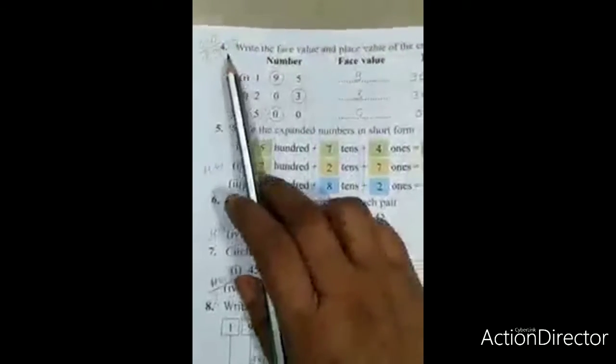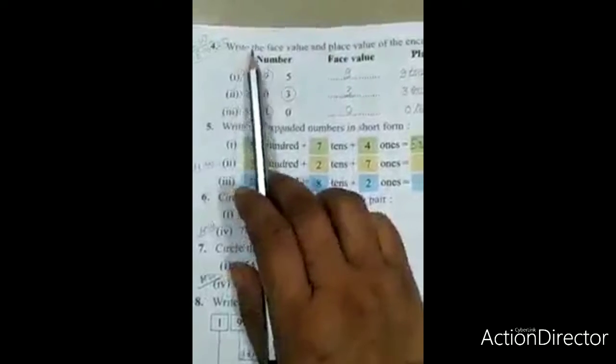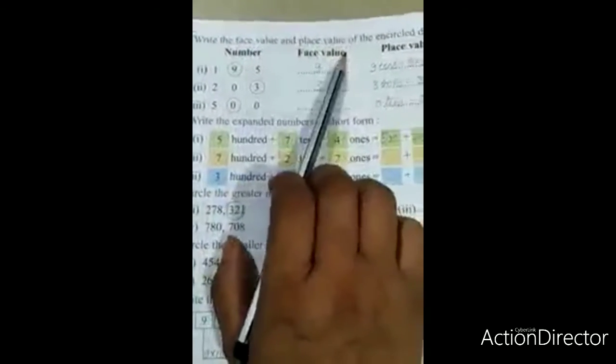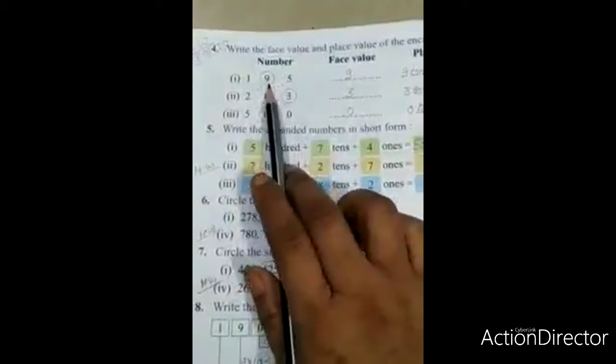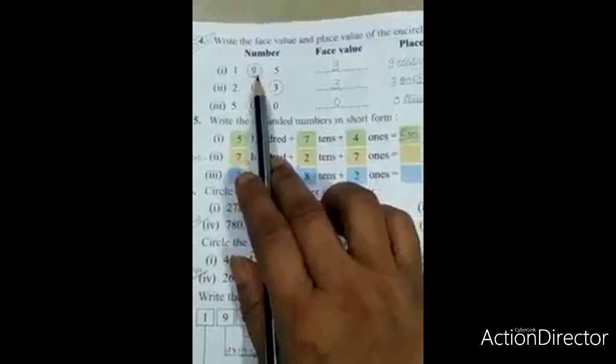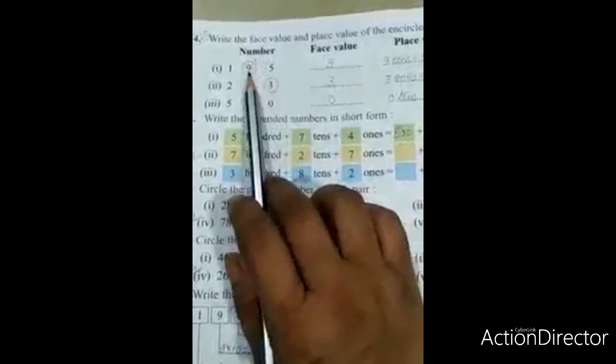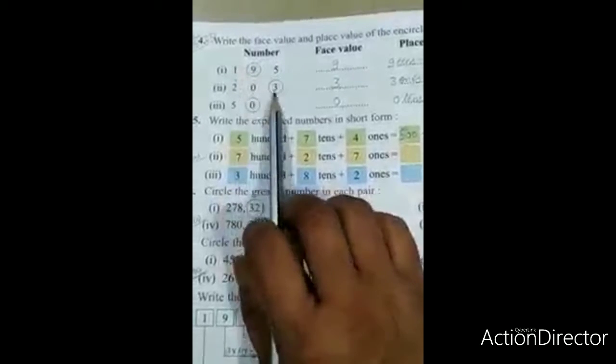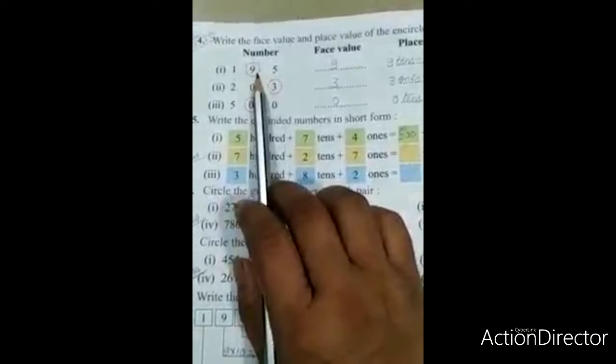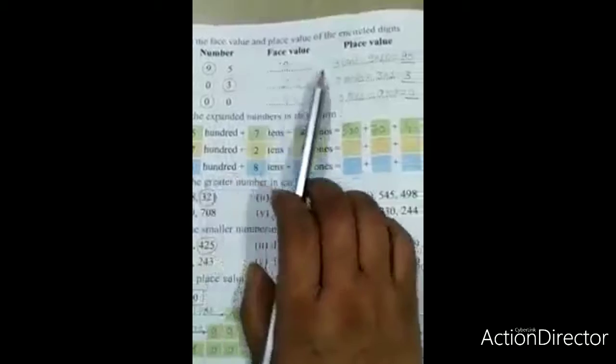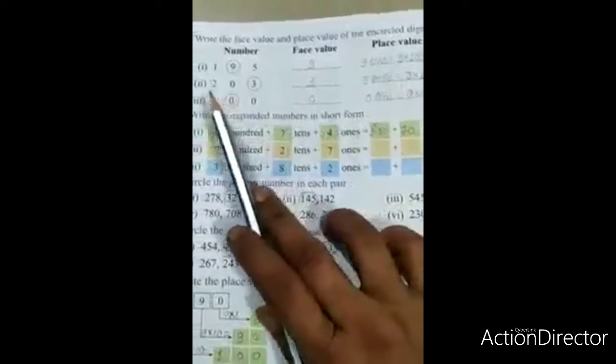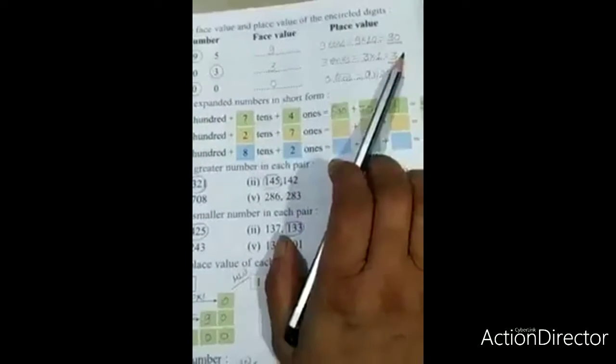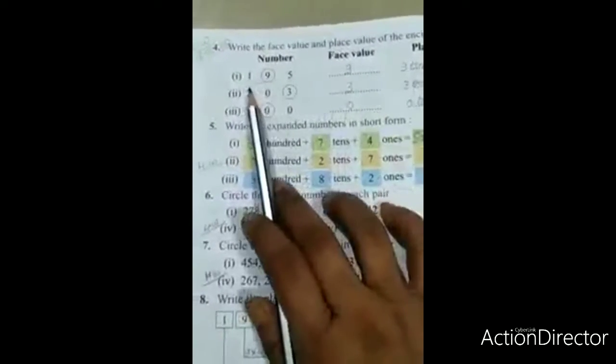Number four: Write the face value and place value of the encircled digit. Here the number is three digits: ones, tens, and hundreds. The digit is written in any place, and place value tells which place it's in - ones, tens, or hundreds.